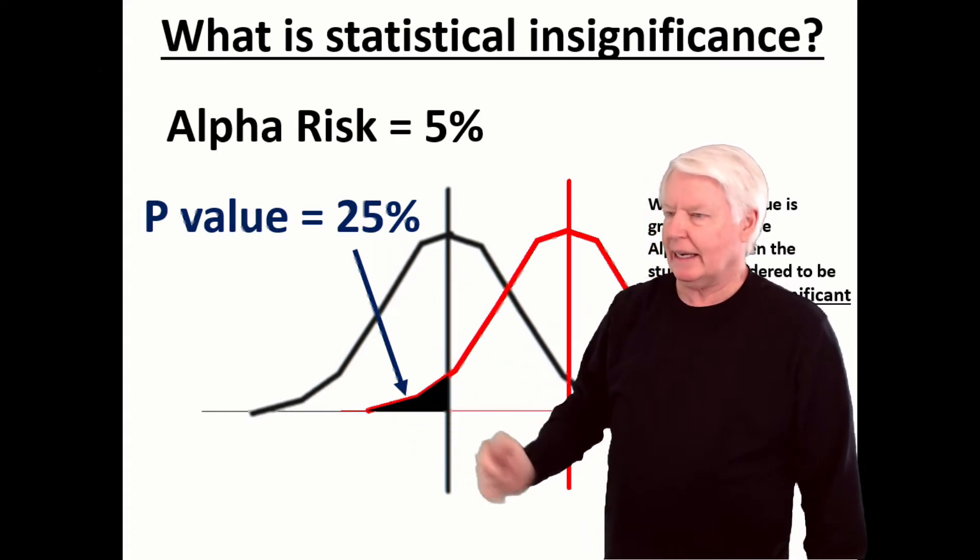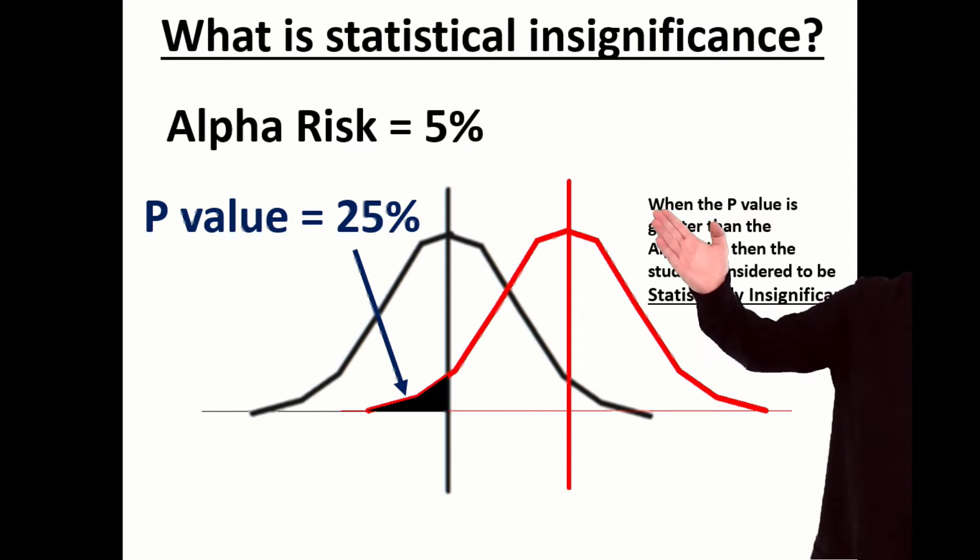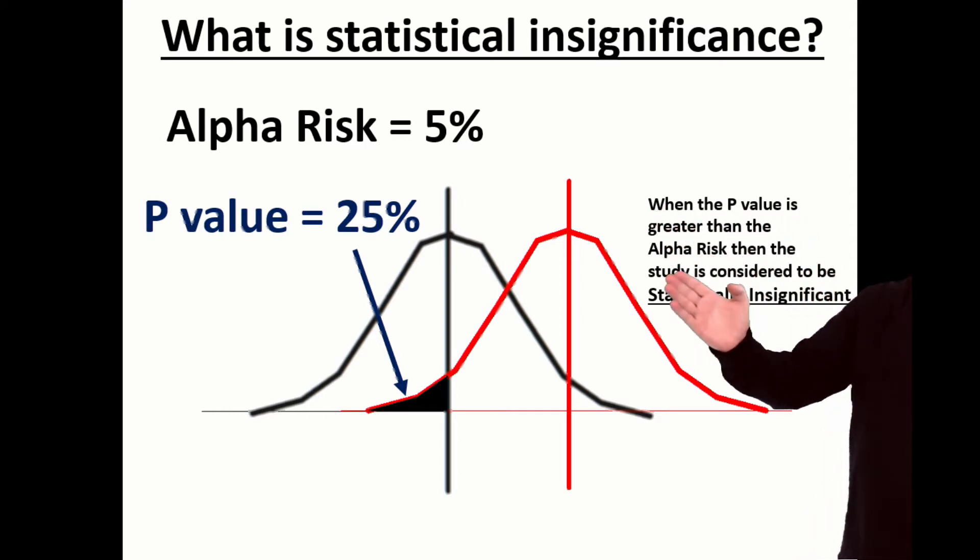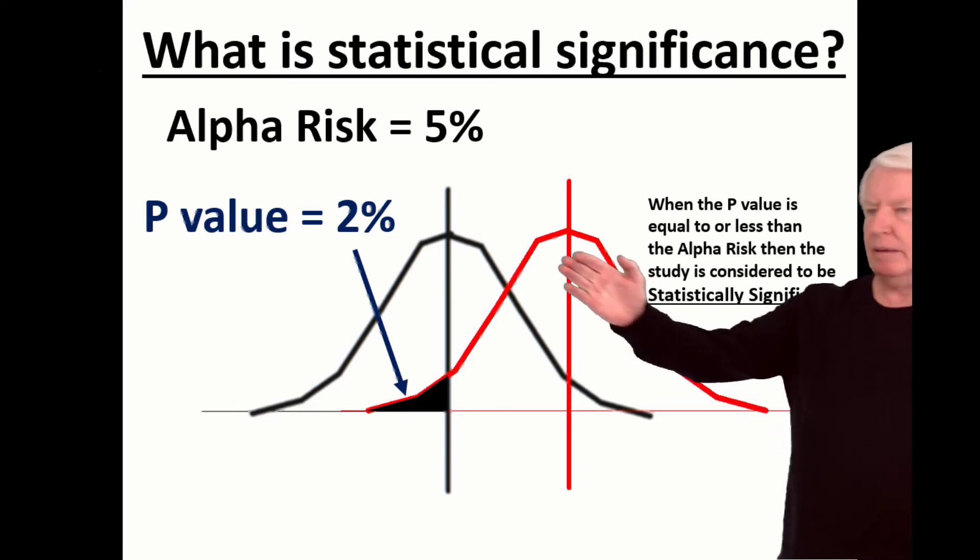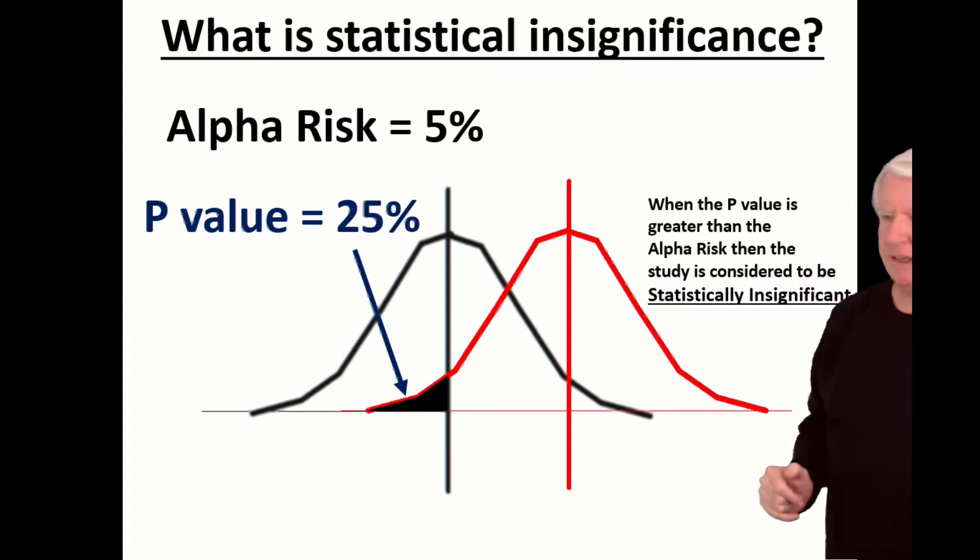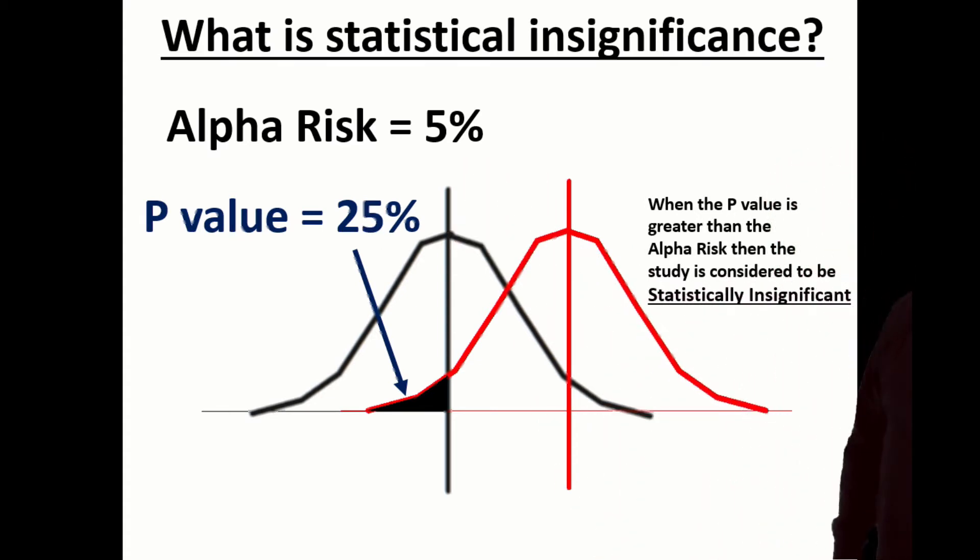Well, in this case, you're actually taking a 25% risk of being wrong when making that statement. When the P-value is greater than the alpha risk, then the study is considered to be statistically insignificant. So again, P-value less than alpha risk, statistically significant. P-value greater than alpha risk, statistically insignificant.